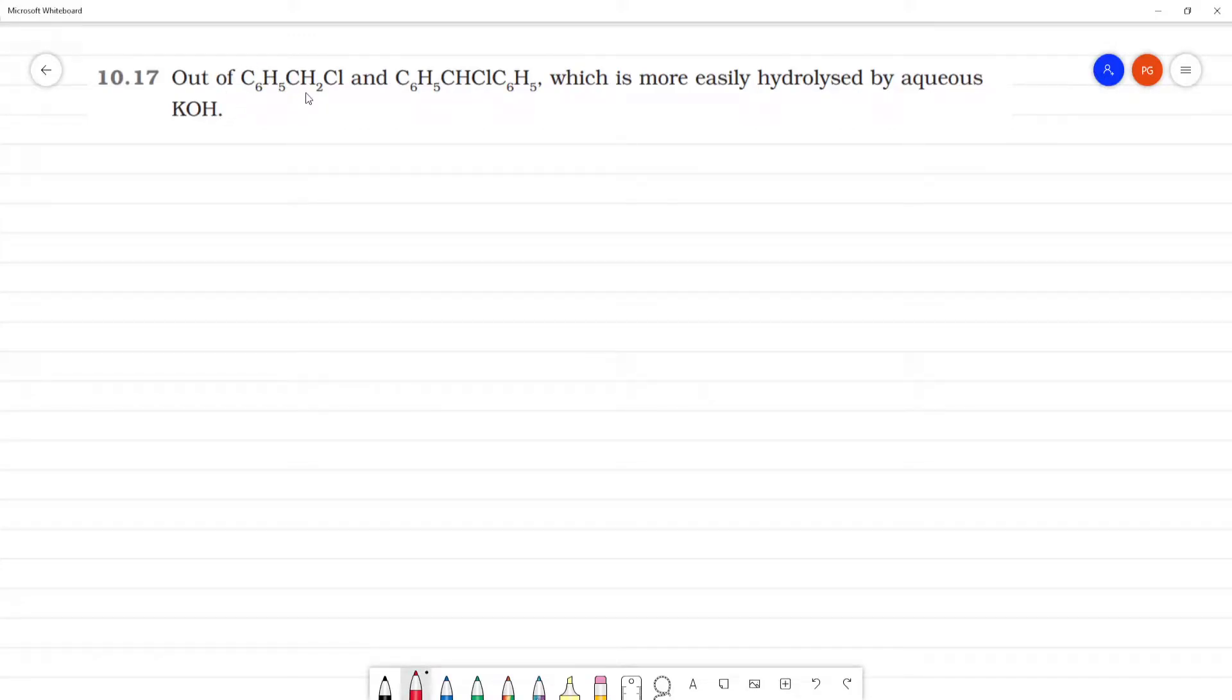Out of C6H5CH2Cl2 and C6H5CHClC6H5, which is more easily hydrolyzed by aqueous ROH. So what is C6H5CH2Cl? We have a benzene ring, this is CH2Cl. This is benzyl chloride.